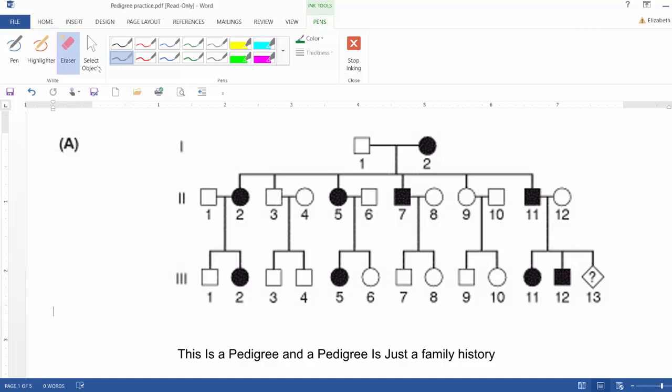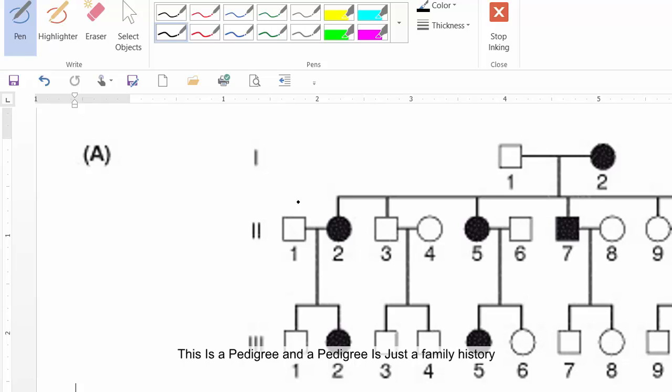This is a pedigree, and a pedigree is just a family history where you're following one specific trait, oftentimes a genetic disorder, through a family.